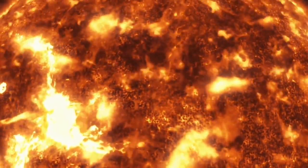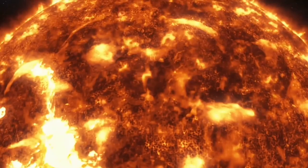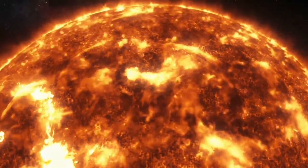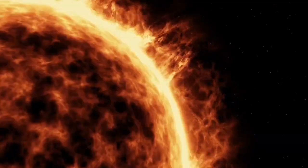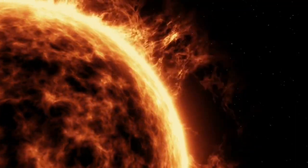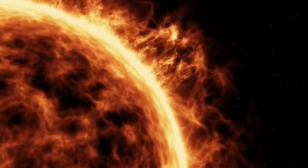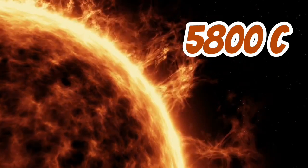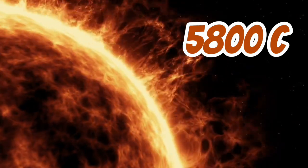It shines so brightly and transmits so much energy because there are atomic reactions which turn the hydrogen into helium. To give you an idea, the surface temperature on the sun is 5,800 degrees Celsius.